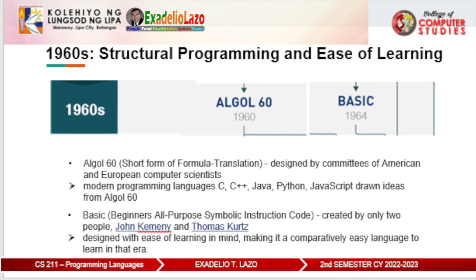Another programming language developed in this era is BASIC, another influential language created in this decade. Contrary to ALGOL, which was created by a group of computer scientists, BASIC was created by only two people: John Kemeny and Thomas Kurtz. They pioneered the use of computers in college education, since their aim was to create something easy to learn for non-mathematics and non-science students. BASIC was designed with ease of learning in mind, making it a comparatively easy language to learn in that era.